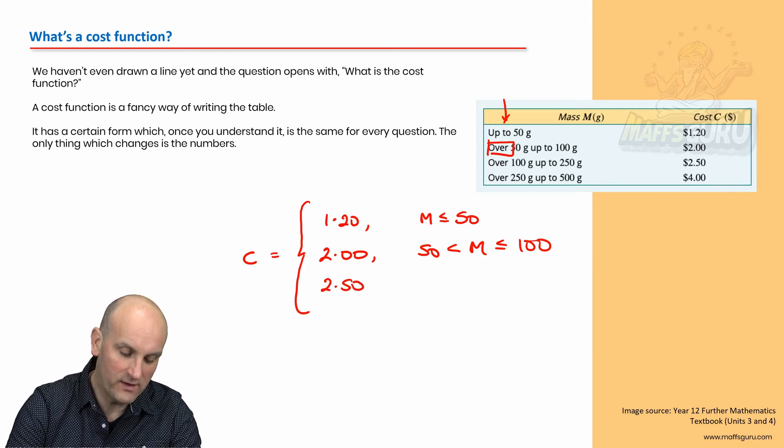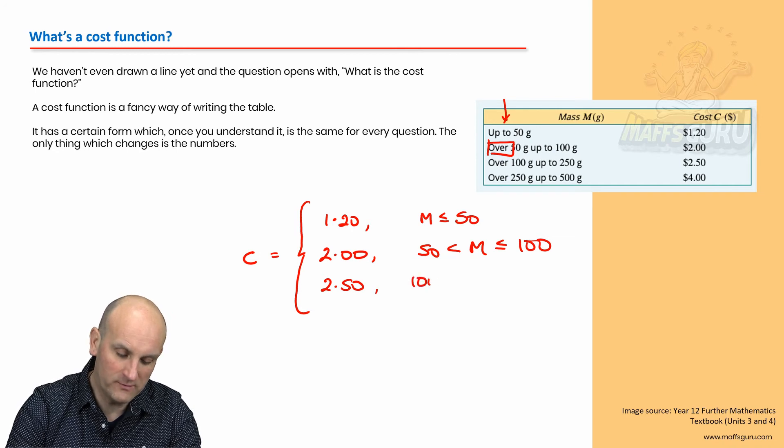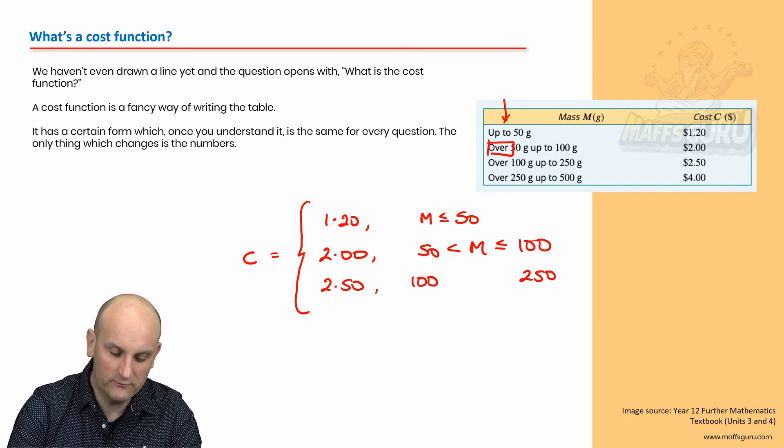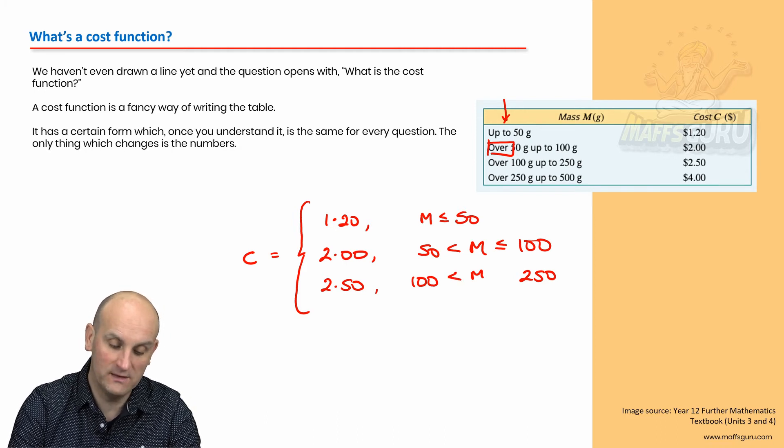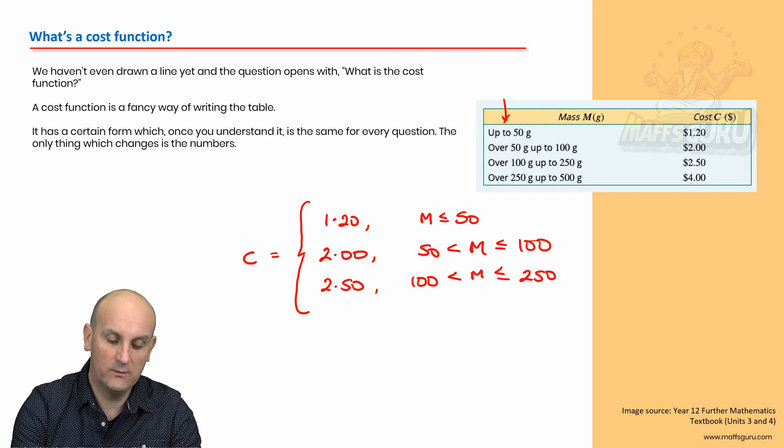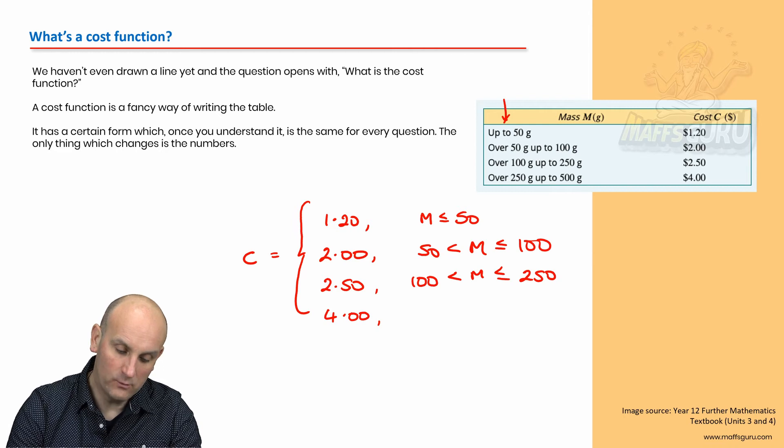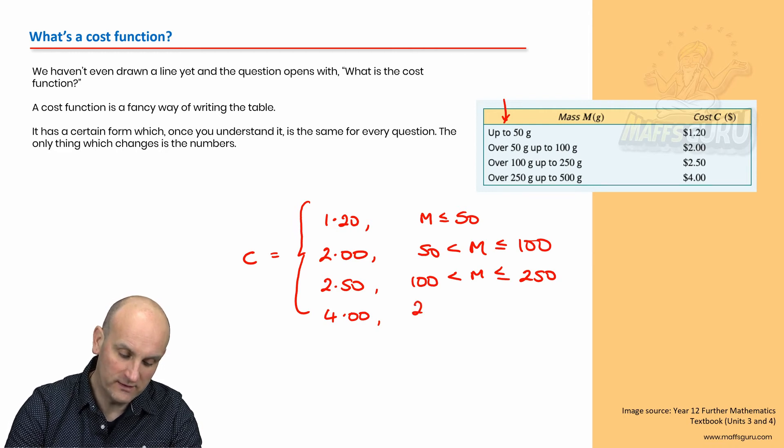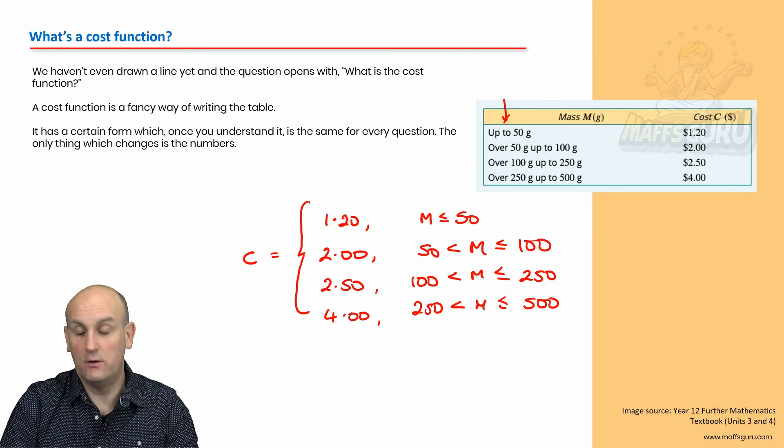So, do you see how to do the next one? Well, we now know it's 2.50. Comma. I've got 100 to 250. So, that's going to be 100. That's going to be 250. My M is going to be in the middle. So, over 100 grams has to be that one. Up to, which includes the equal sign, has to be that one. And, the last one then is 4.00. And, what we've got over 250 grams, 500 grams, M. And, lo and behold, that is my cost function.